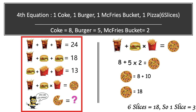We need to solve this equation using the BODMAS rule. According to BODMAS, we first solve the multiplication, then the addition. So 5 × 2 = 10, then 10 + 8 = 18. One pizza having six slices equals 18, so one slice equals 18 ÷ 6 = 3.